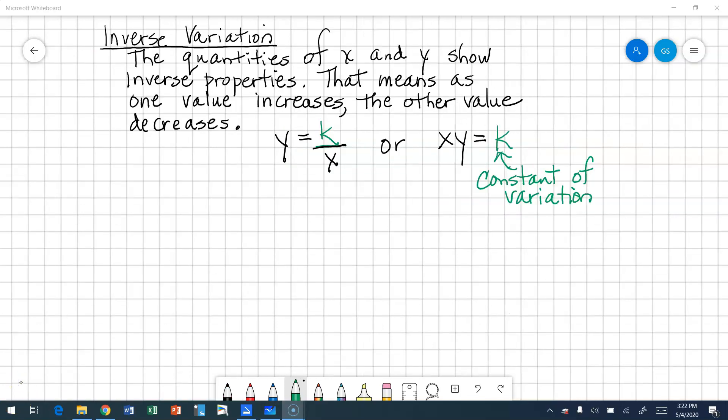An inverse variation is where the quantities of x and y have opposite properties, or inverse properties. What I mean by that is, as one value increases, the other value decreases. If we look at this equation here, y is equal to k over x.